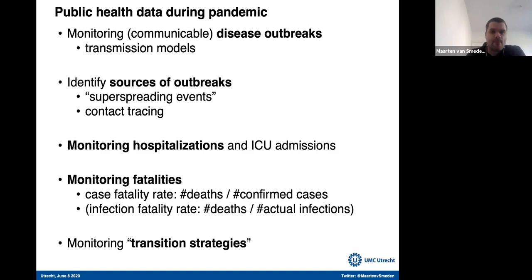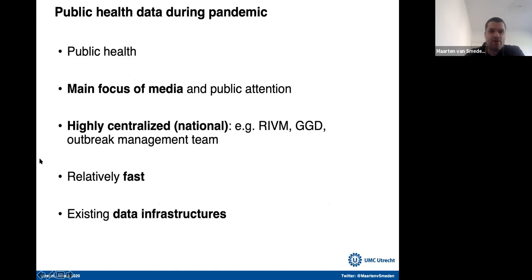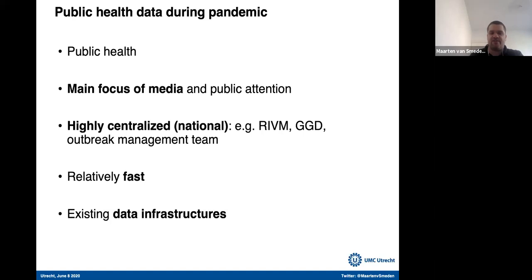This public health data during a pandemic is the main focus of media and public attention, and it's highly centralized — on a national level. We have the RIVM, the GGD, and the outbreak management team, which all monitor and organize the collection of data and analysis. One of the characteristics is that it's extremely fast — updates from the RIVM every day. And one of the benefits they have is a very good data infrastructure. Of course, we can have discussions about whether all the data is very accurate, and I'll come to that later.